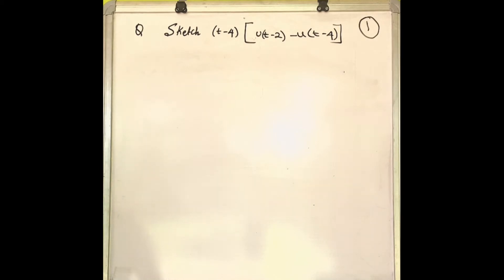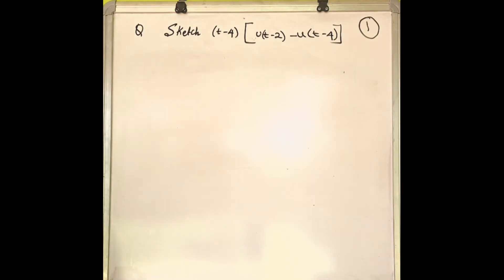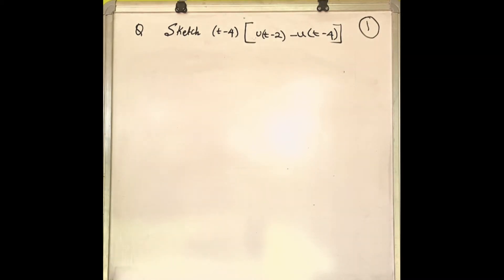Sketch (t minus 4) times [u(t minus 2) minus u(t minus 4)]. First, analyze the problem. t minus 4 is to be multiplied with u(t minus 2) minus u(t minus 4).